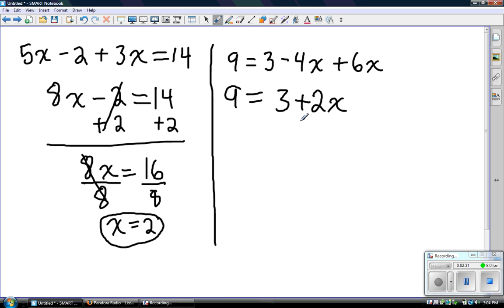This is a regular two-step algebraic equation just like it was over here. The first thing we're going to do is get rid of the 3. Since it's positive, we're going to subtract 3 from both sides. We get 9 minus 3, that gives us 6 on the left-hand side, and then 2x on the right-hand side.